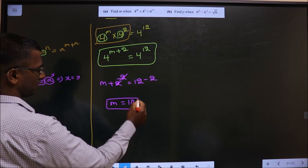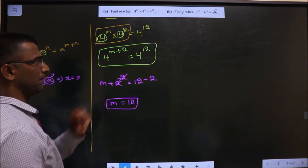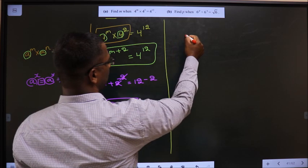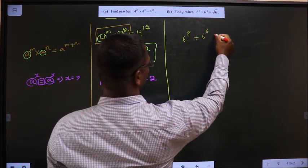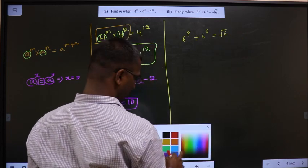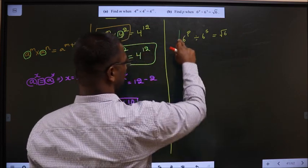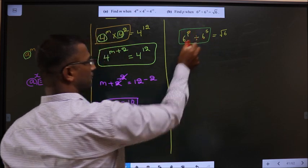Now problem B: 6^p / 6^5 = √6. How do you simplify this? What formula will you apply?